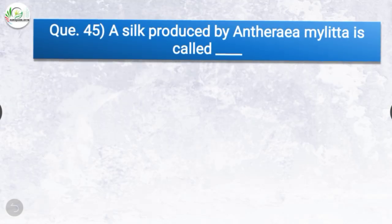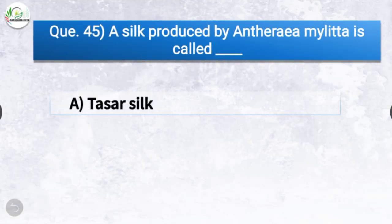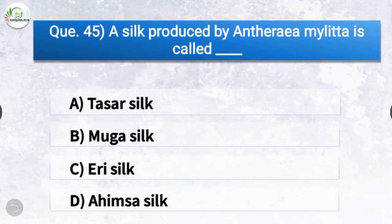Question number forty-five: A silk produced by Antheraea mylitta is called dash. The options are Tassar silk, Muga silk, Eri silk, or Ahimsa silk. The correct answer is option A, Tassar silk — a silk produced by Antheraea mylitta is called Tassar silk.